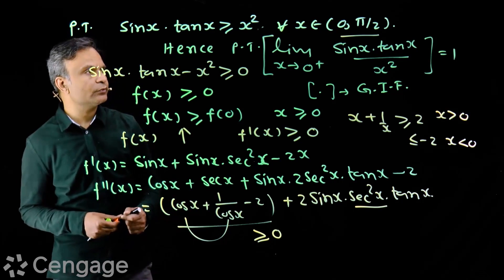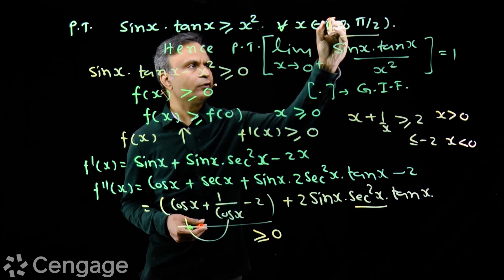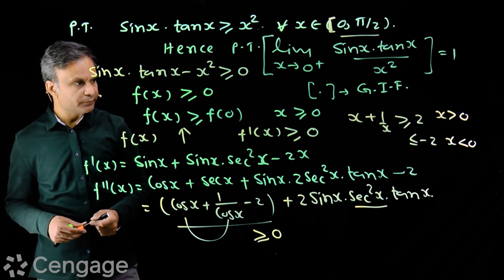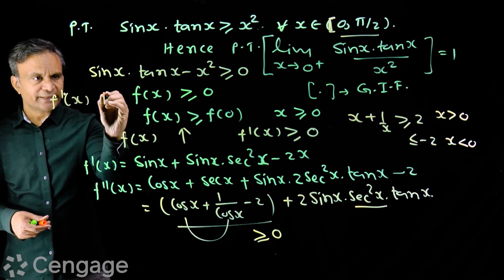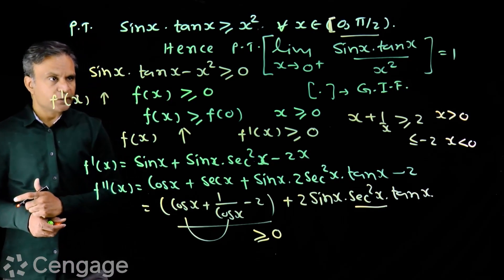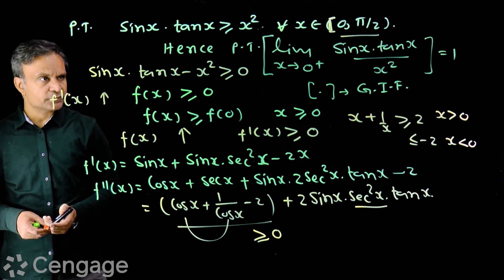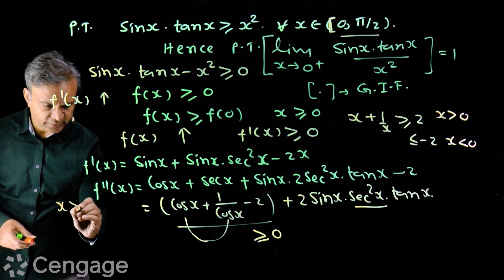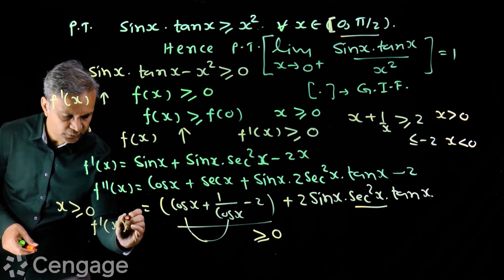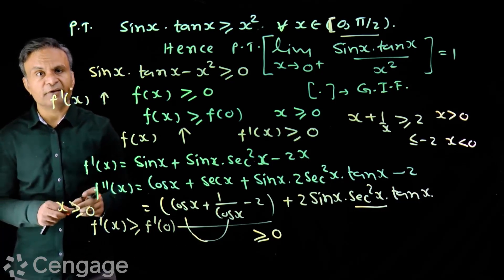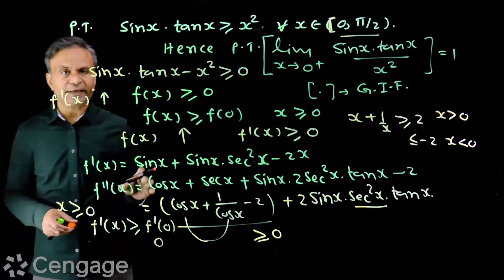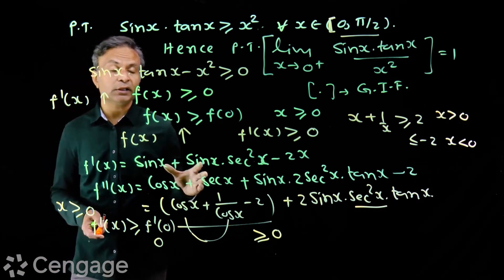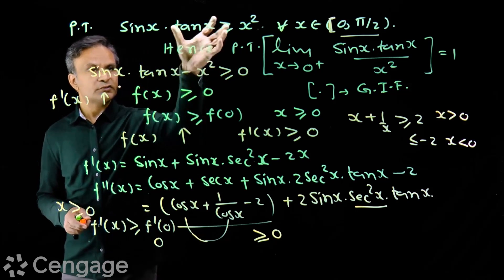For the non-negative condition we use a closed interval. Since f''(x) ≥ 0, f'(x) is an increasing function. Now f'(0) = 0 + 0 - 0 = 0. Therefore for x ≥ 0, f'(x) ≥ f'(0) = 0. So f'(x) ≥ 0 — this was our target, because we needed to prove f'(x) ≥ 0 to show f(x) is an increasing function. This is now proved.